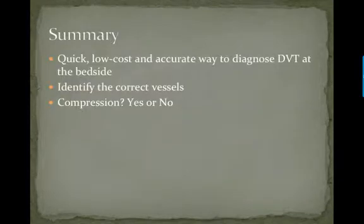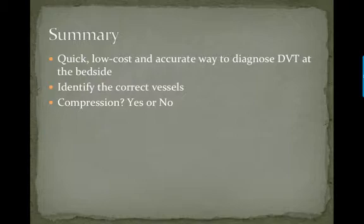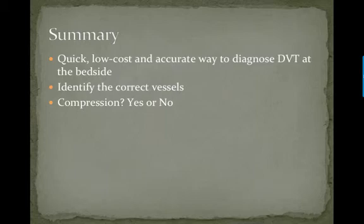In summary, you can see that this is a quick, low-cost, and accurate way to diagnose a DVT at the bedside, which can change your management of a patient. Make sure to identify the correct vessels, including the common femoral vein where it bifurcates and its junction with the greater saphenous vein, as well as the popliteal vein in the popliteal fossa. The basic question is: does the vessel compress all the way? If yes, there's no DVT. If the vessel does not compress, there is a DVT present. Thank you.